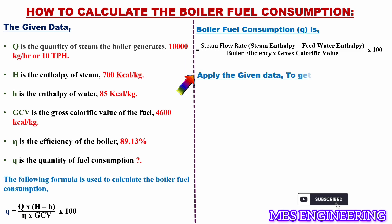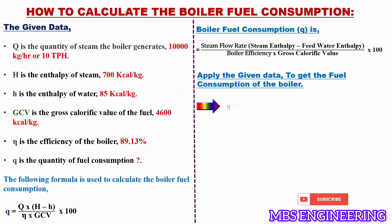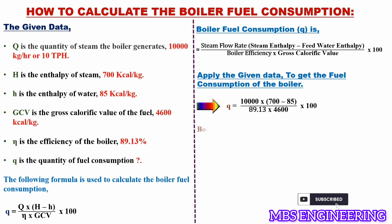Applying the given data, the boiler fuel consumption is: 10,000 multiplied by (700 minus 85) multiplied by 100, and then the obtained value is divided by 89.13 multiplied by 4,600.